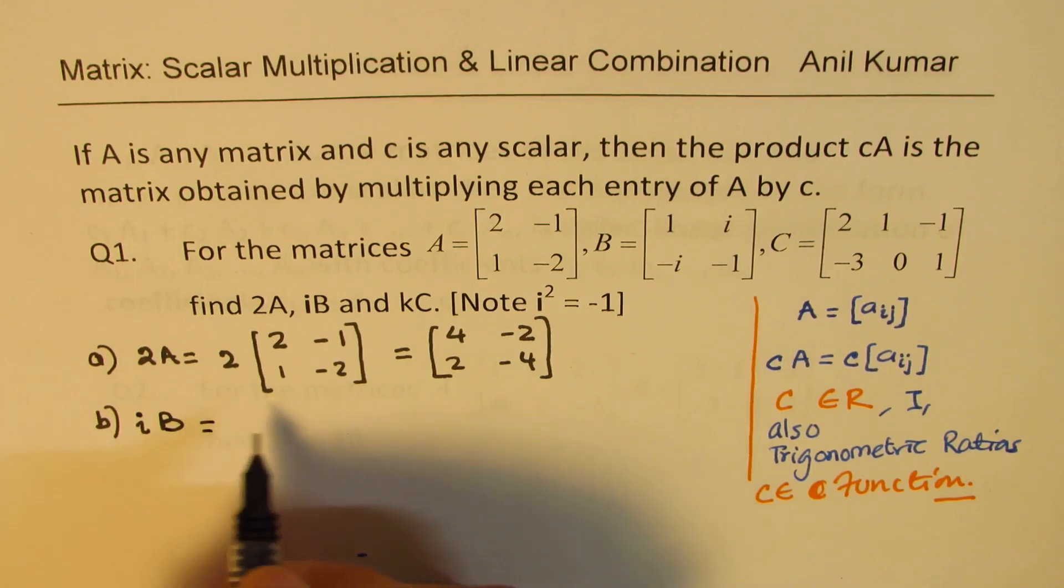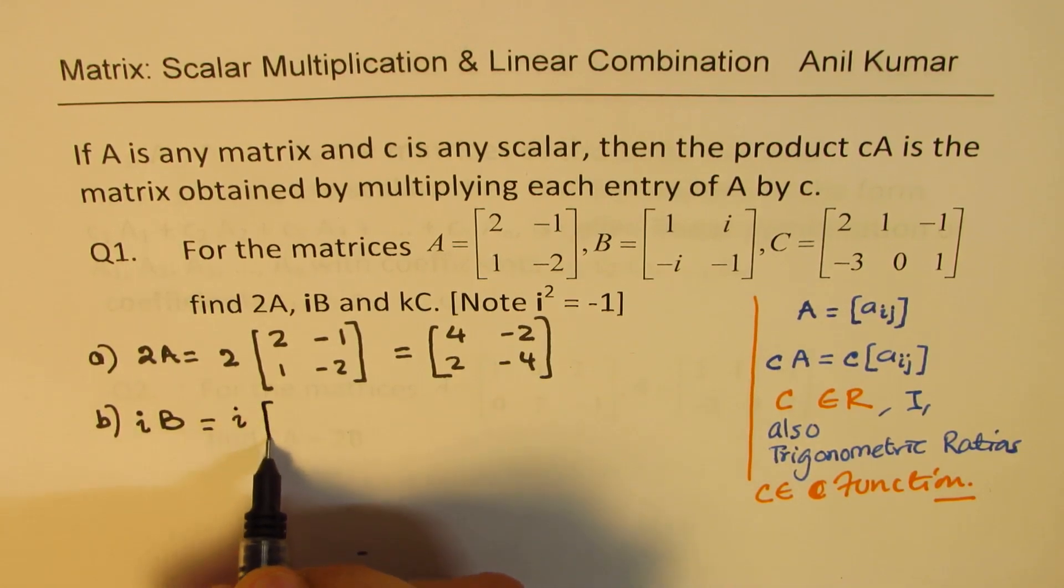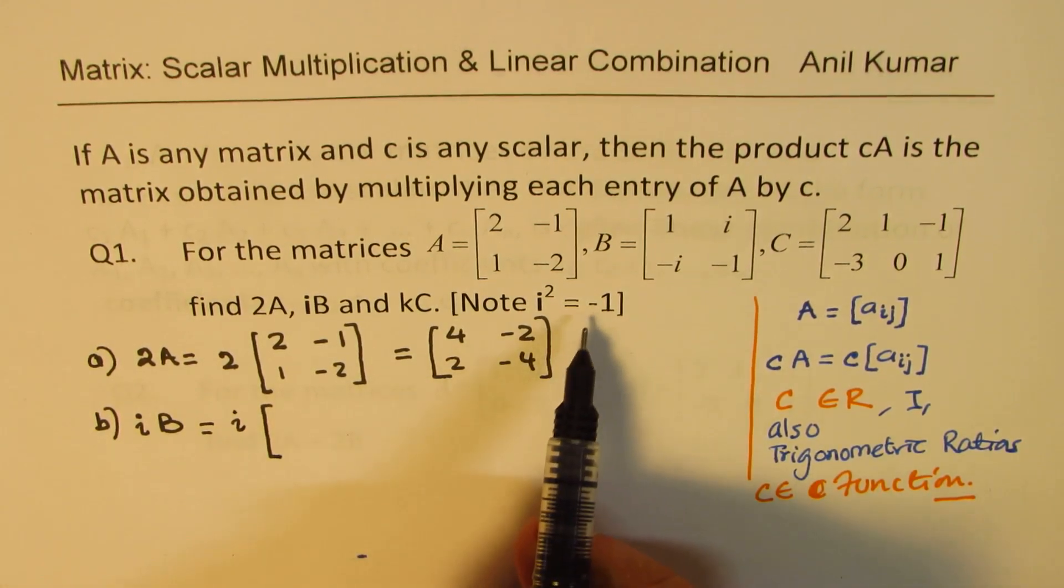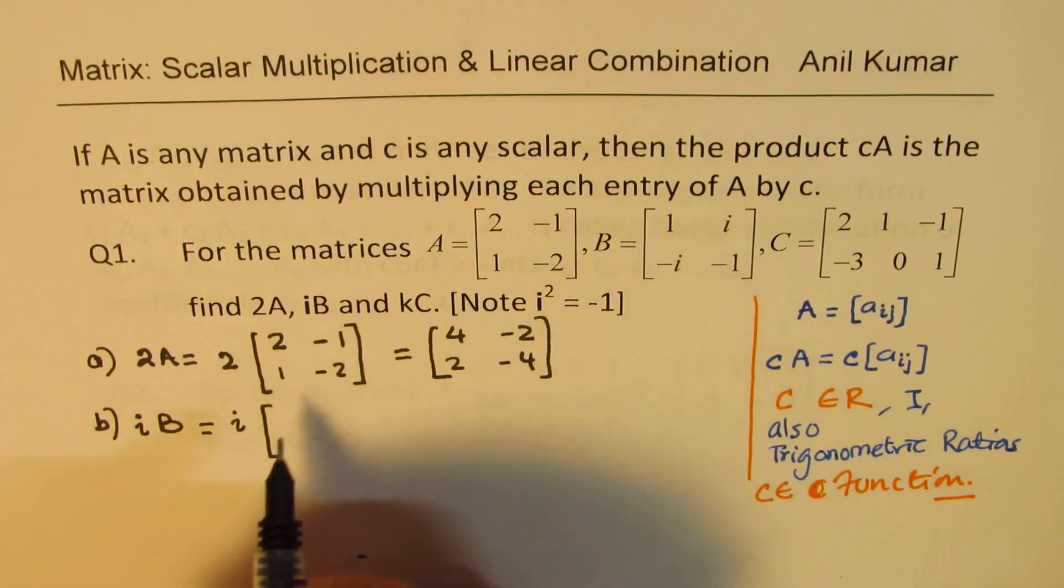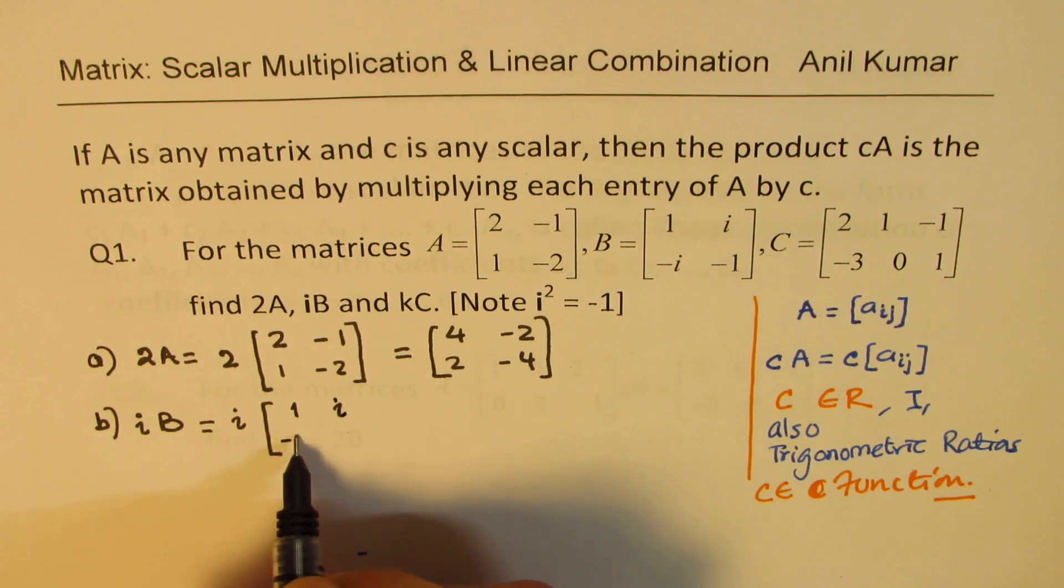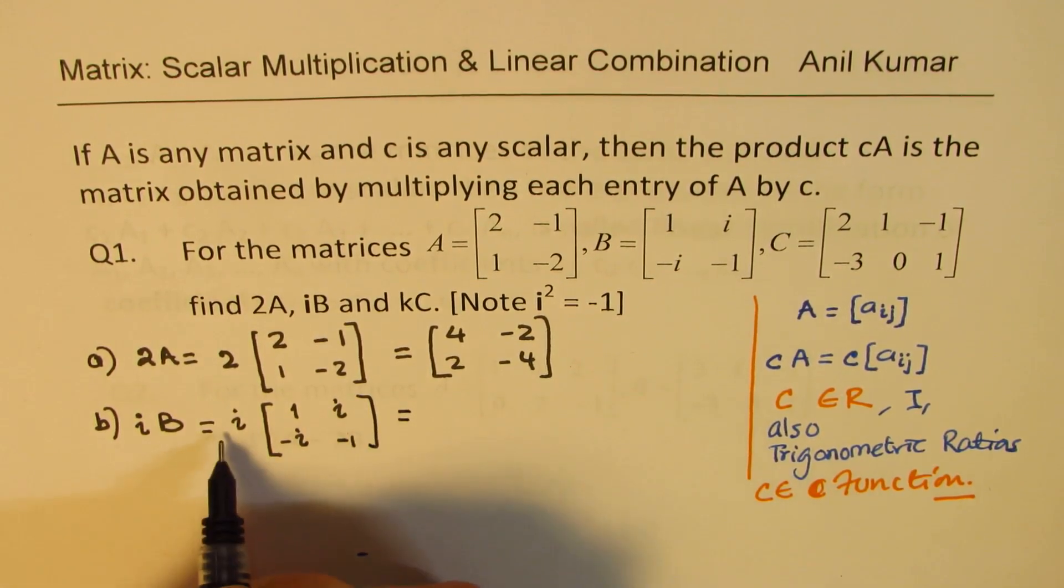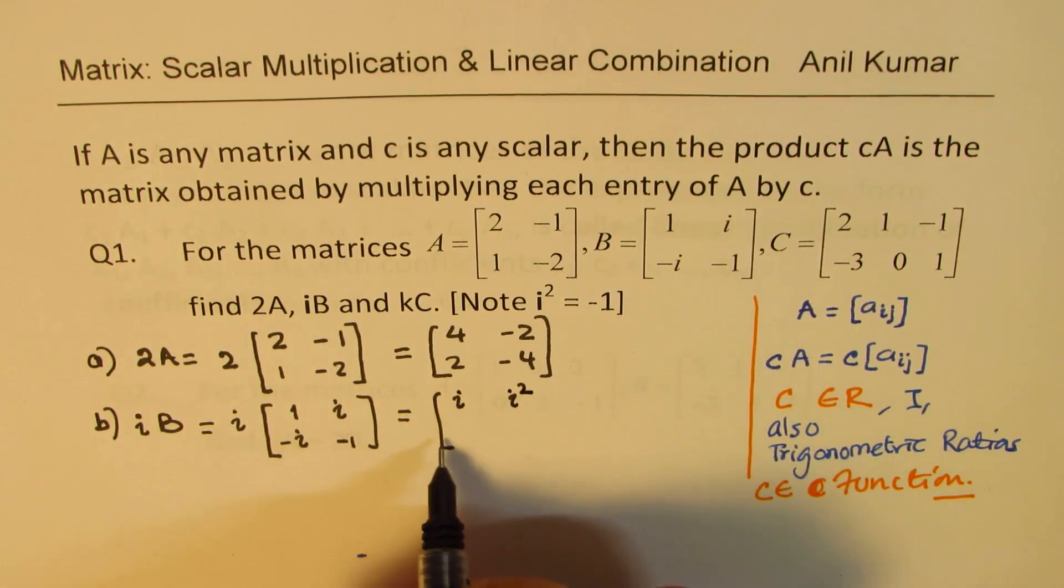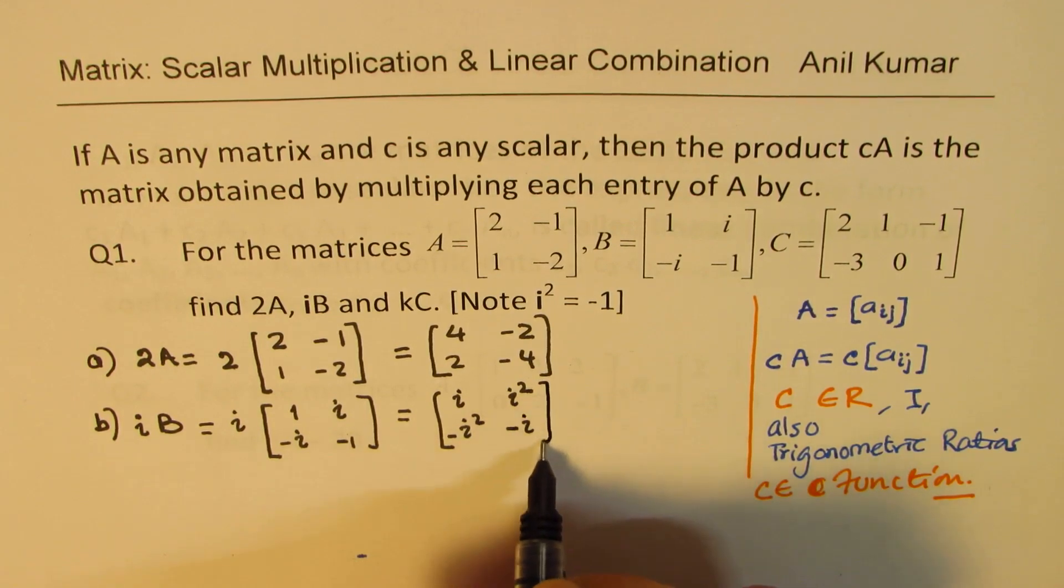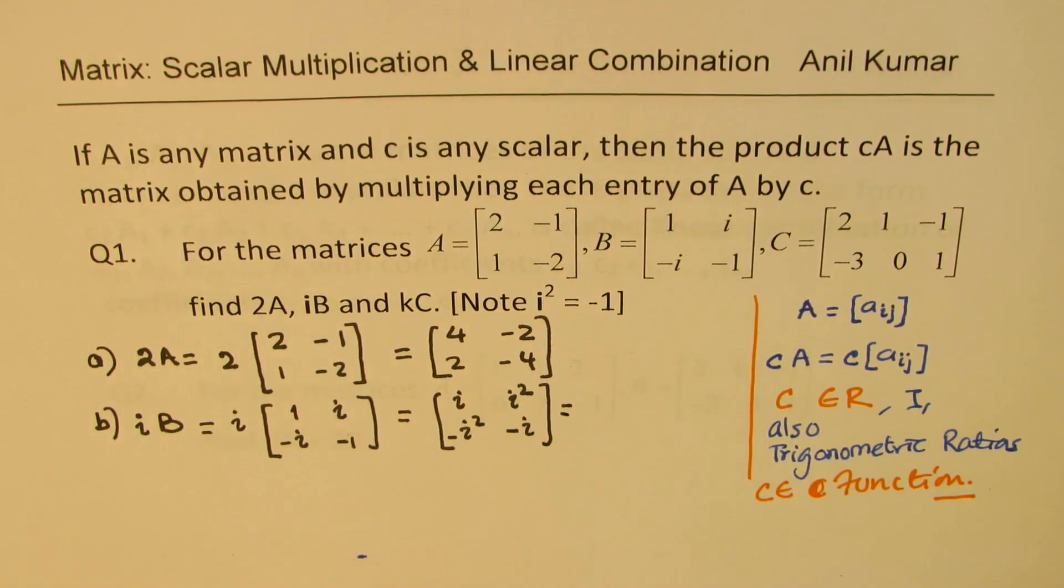The next is i times B. So i is an imaginary number which is equal to, i squared is equals to minus one. So this is one i, minus i and minus one. So when you multiply with i what you get here is i, here you get i squared, minus i squared and minus i.